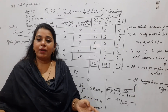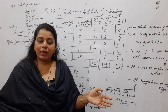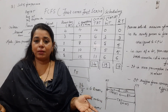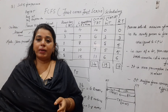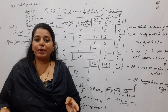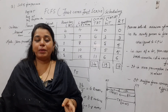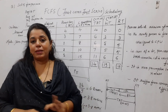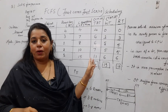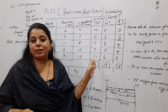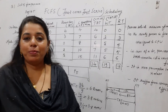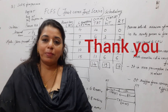The convoy effect is like at a billing counter — if a person has 100 items in their trolley the next person behind them with just one or two items still has to wait until the first person completes billing. That type of effect is called the convoy effect in operating system scheduling. Hope this session is useful to you all. Thank you, bye-bye, take care.